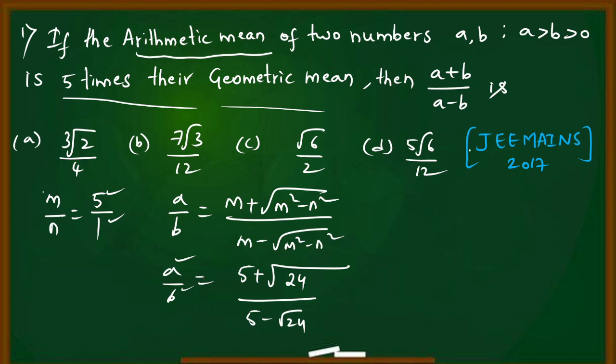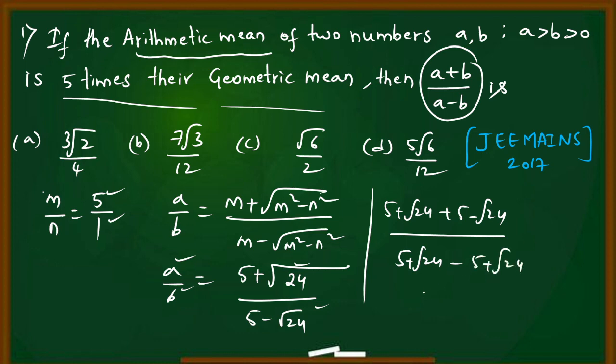Now for (a+b)/(a-b), we add numerator and denominator: [5 + √24 + 5 - √24] divided by (a-b), which is [5 + √24 - (5 - √24)]. Minus times minus is plus, so we get root 24. This simplifies to 10 divided by 2√24.